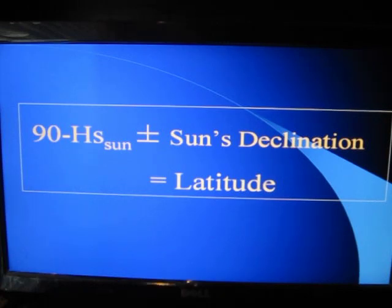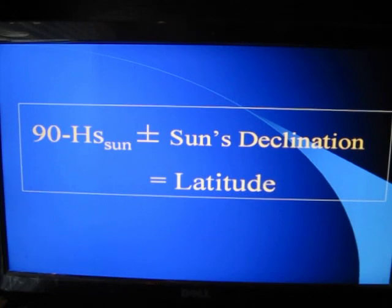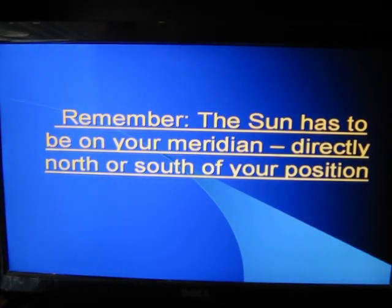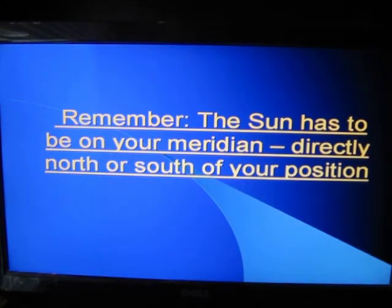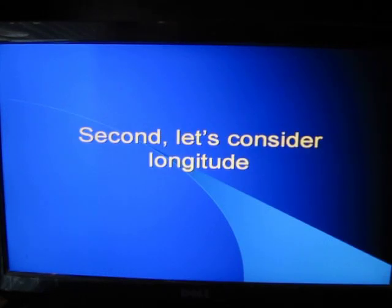The modified formula is: 90 minus the HS of the sun, plus or minus the sun's declination, equals your latitude. That is the relationship. Don't worry too much about this now — later when we work an actual sight, you'll see how this comes into play. It's actually quite simple if you think about it. Remember the sun has to be on your meridian directly north or south of your position at noon for you to use it to determine a position fix.